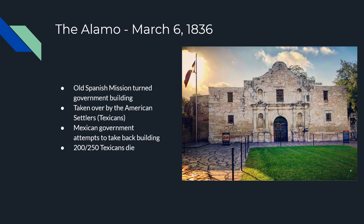March 6th, 1836 is the Battle of the Alamo. The story behind it is not quite the one you've heard. The Alamo was originally an old Spanish church or mission that was turned into a local government building. This building was taken over by force by American settlers, and then the Mexican government tried to take the building back from these rebels. Two hundred out of the 250 American settlers who had taken over the government building were killed in the attempt to bring it back under Mexican control.